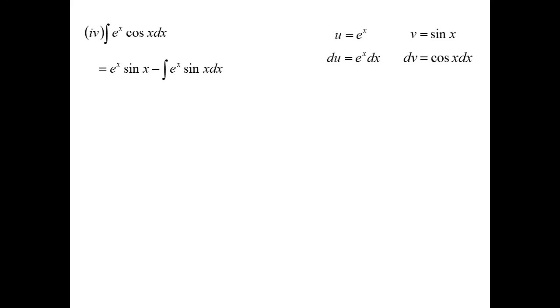So I'll do it again. But whichever way you chose first time, stick with it the second time or you'll end up in a nice circular argument and you'll come back to where you started from. So I'm once again going to choose u equals e to the power of x. du then is e to the x. dv this time is sine x. So v will be minus cos x.